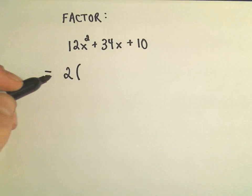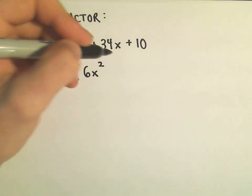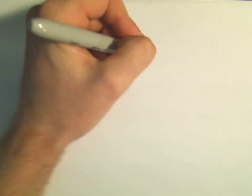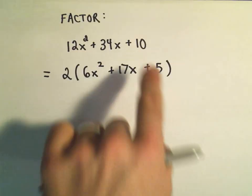And then we just have to think what goes back in the parentheses. So we would need a 6x squared to get our 12x squared. It looks like we would need a 17x to get the 34x. And then we would need a positive 5 so that when we distribute, we get our 10.